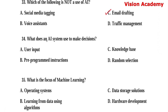Question number 34. What does an AI system use to make decisions? Option A: User input. Option B: Pre-programmed instructions. Option C: Knowledge base. Option D: Random selection. Here, option C, knowledge base, is the right answer.